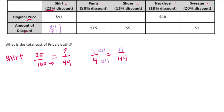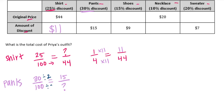Next, the pants. She's getting a 30% discount, so 30 out of 100. The amount of the discount is $15, so this time we know the part but not the whole. I don't need to reduce — looking at the relationship between 30 and 15, I just divide by 2 to get to 15. So 100 divided by 2 gives 50. The pants were originally $50.